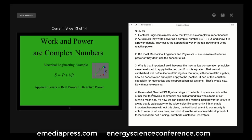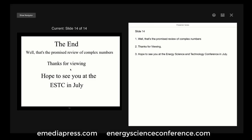Here's what geometric algebra brings to the table: it opens a crack in the armor that the physics community has built around the topic of self-running machines. It's how we can explain the missing input for switched reluctance generators in a new way that is satisfactory to the wider scientific community. Without this piece, the traditional scientific community is able to write us off as a hoax and shut down the widespread development of these wonderful self-running switched reluctance generators.